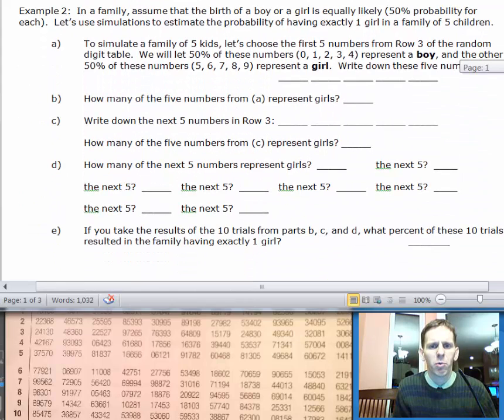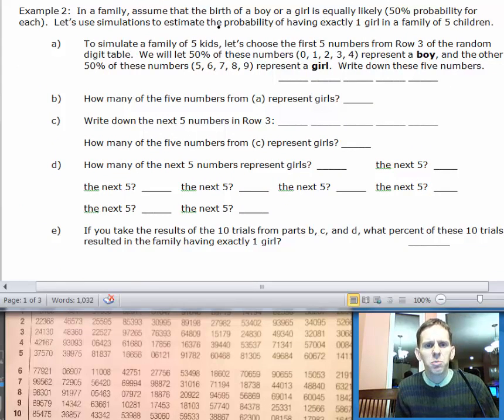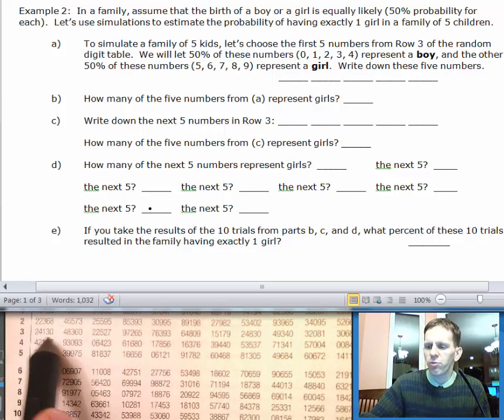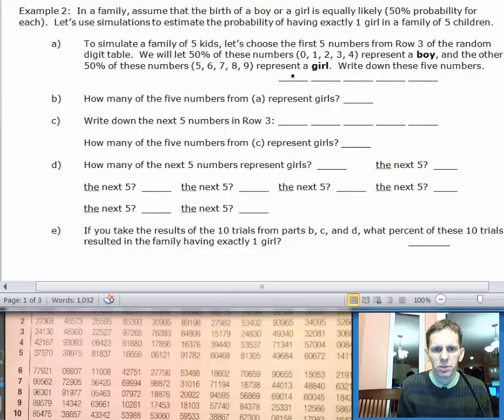Let's take a look at example 2 now. This is an example where we're going to talk about children in a family. Let's assume that the birth of a boy or a girl is equally likely, 50% chance for each. We're going to use simulations to estimate the probability of having exactly one girl in a family of 5 children. To simulate a family of 5 kids, let's choose the first 5 numbers from row 3 of the random digit table. You see those numbers right here: 2, 4, 1, 3, 0.